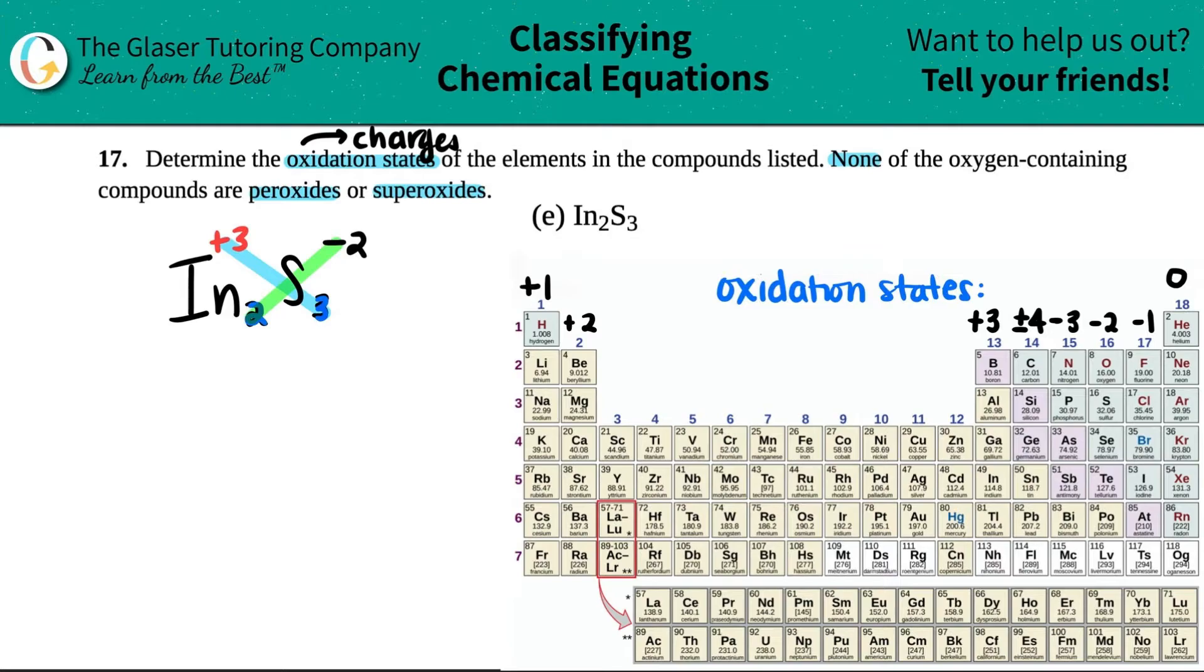So looks like indium was a plus three and sulfur was a negative two. Now always double-check one of them to see if it matches with the trend that you should memorize of the oxidation states. If it matches, chances are the other one is going to match as well.